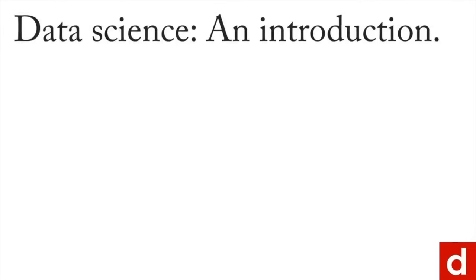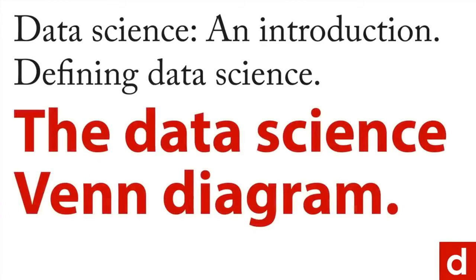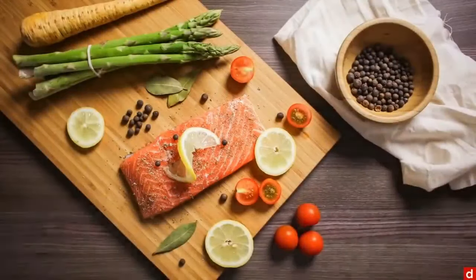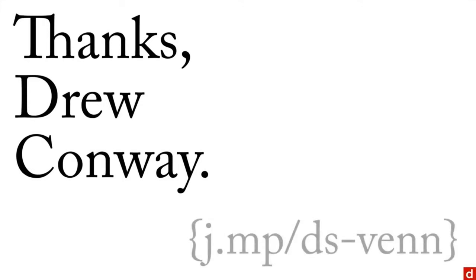Back here in data science, we're going to continue our attempt to define data science by looking at something that's really well known in the field, the data science Venn diagram. You can think of this in terms of what are the ingredients of data science. We're going to first say thanks to Drew Conway, the guy who came up with this. If you want to see the original article, you can go to this address.